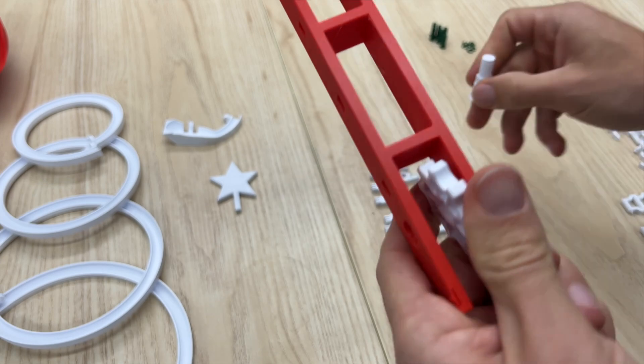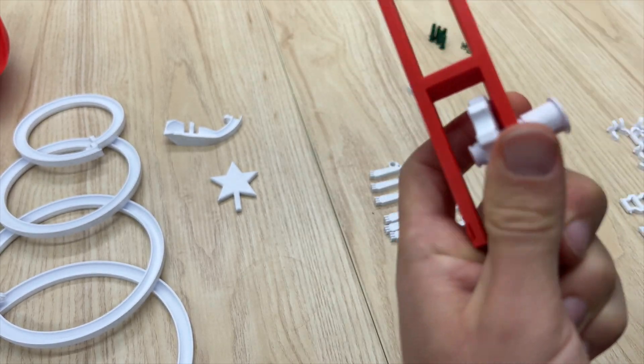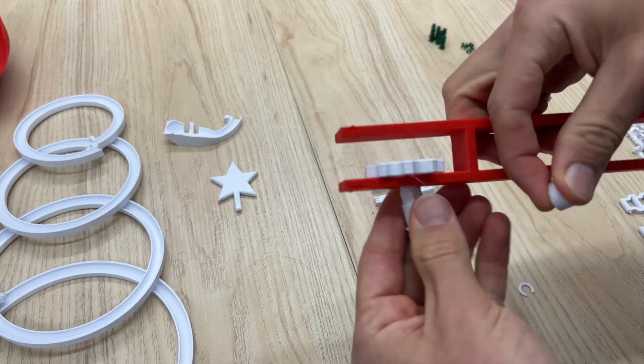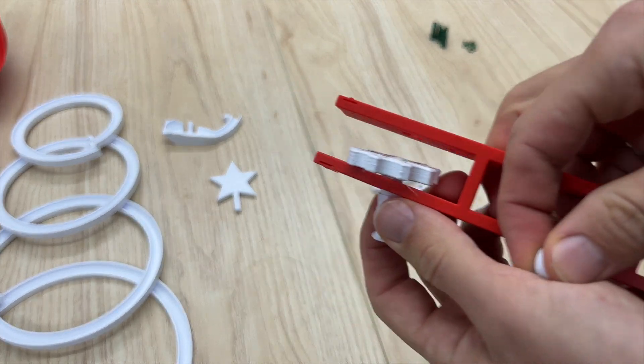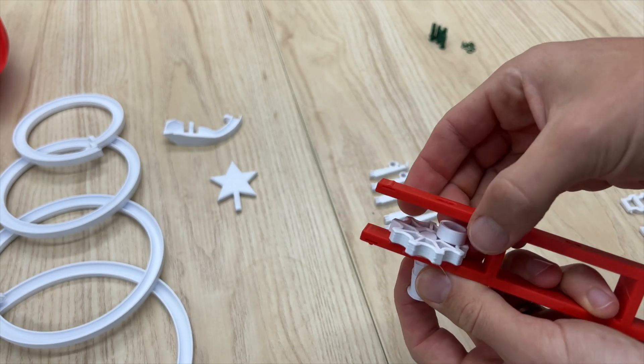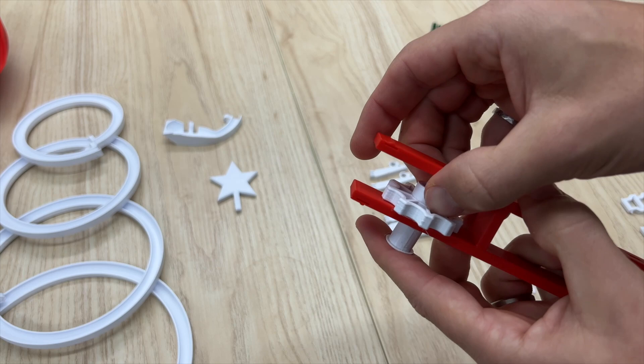Repeat the process for the bottom sprocket. Slide the shaft in, grab the spacer before pushing it all the way through, figure out how you're going to get that into place, and then push the shaft all the way through to the other side.